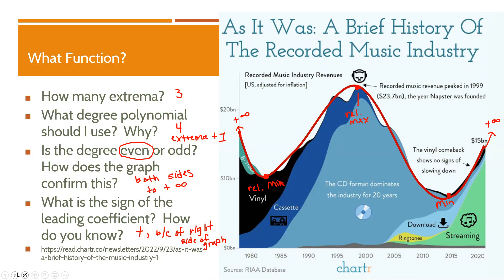What function would I use for this? With a degree of four, I would use a quartic function. And that's how I would model this information about recorded music.